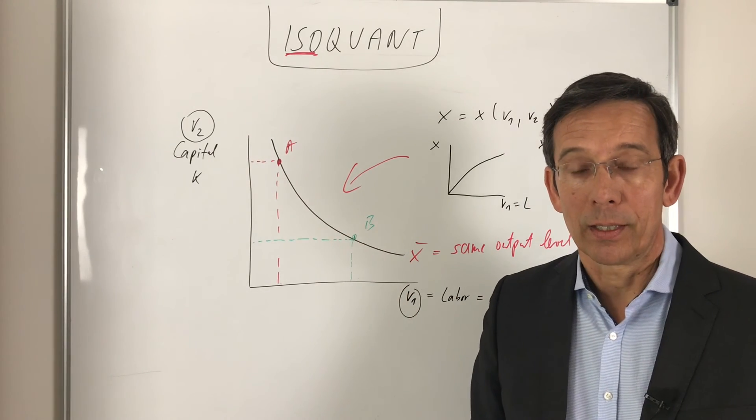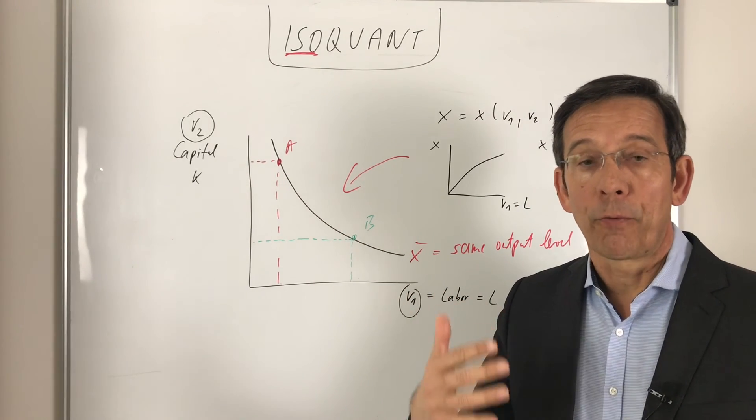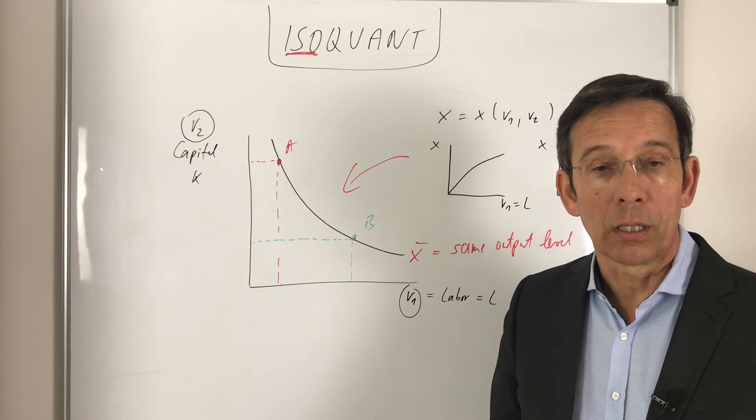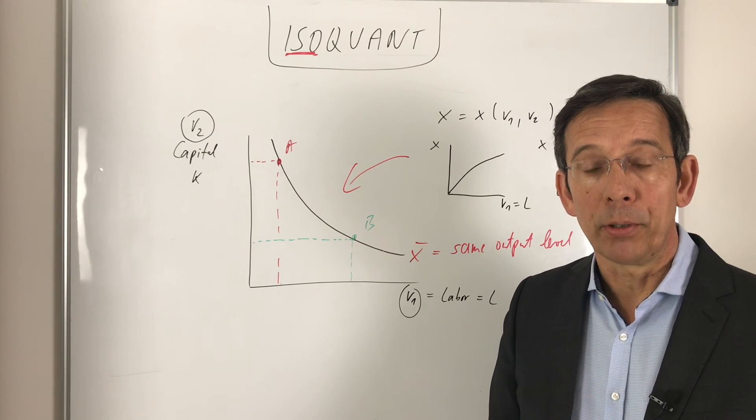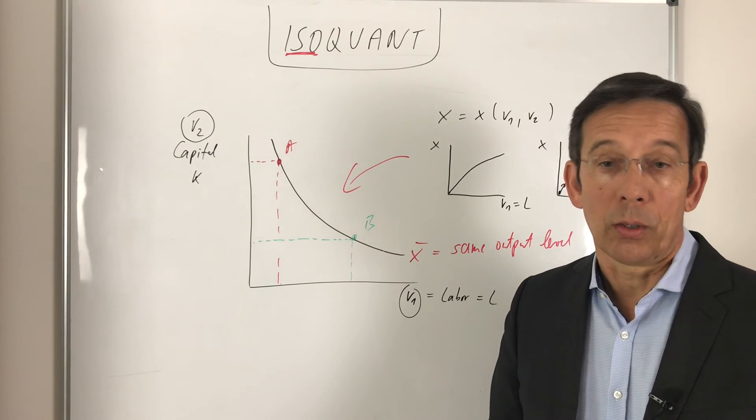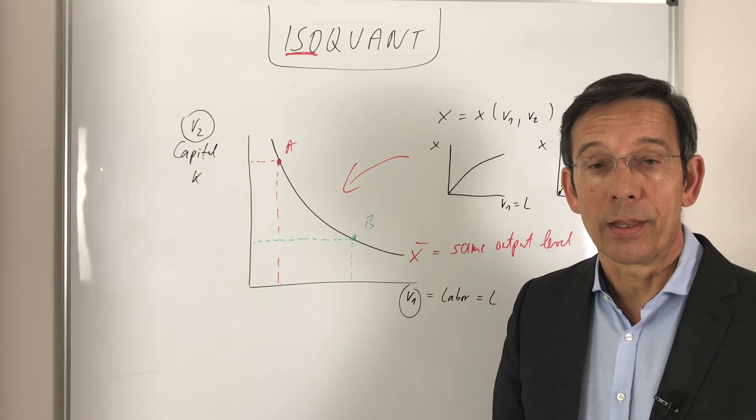And we need the isoquant, then, for deriving what we say, optimal combinations of input given the costs or the prices for the input factors.